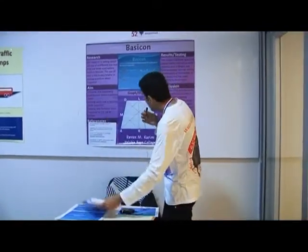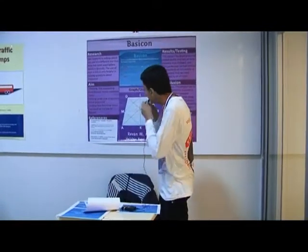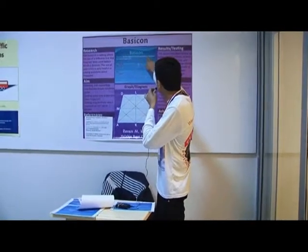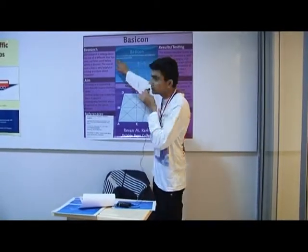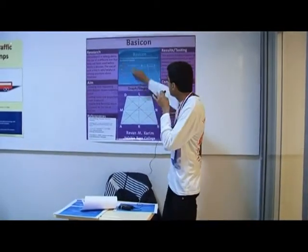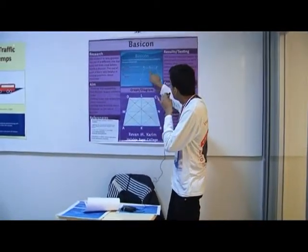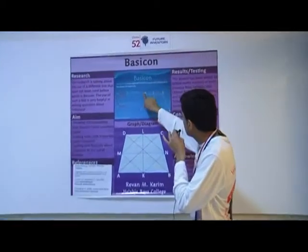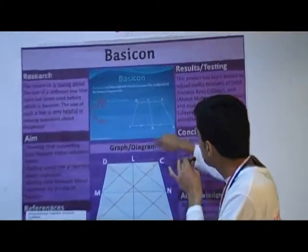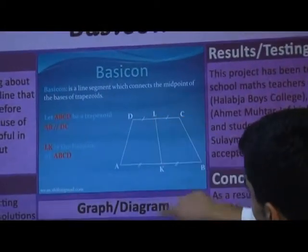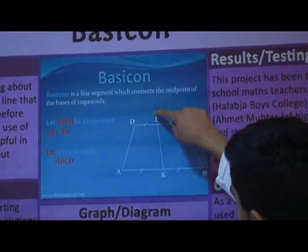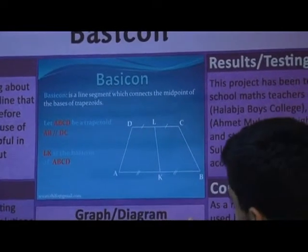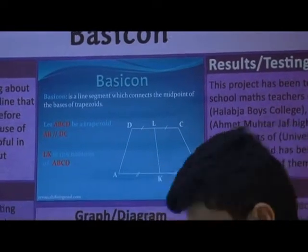Base gun is a line segment which connects the midpoint of the bases of the trapezoid. As we see here, ABCD is a trapezoid and KL is the base gun because it connects the midpoints of the trapezoid.